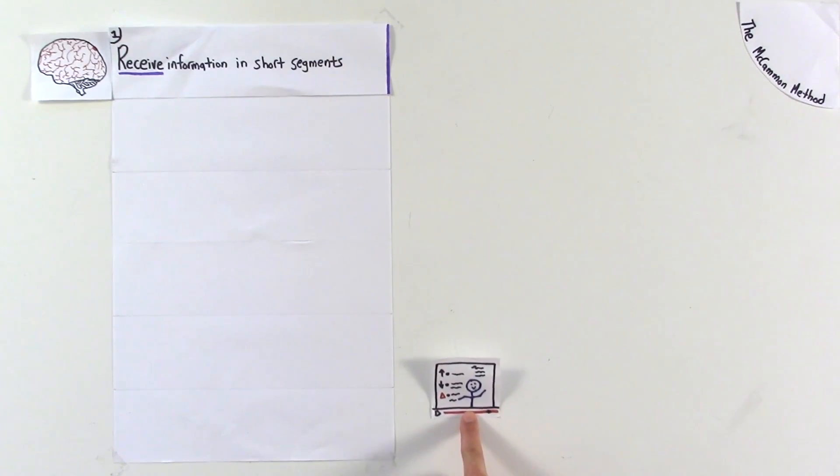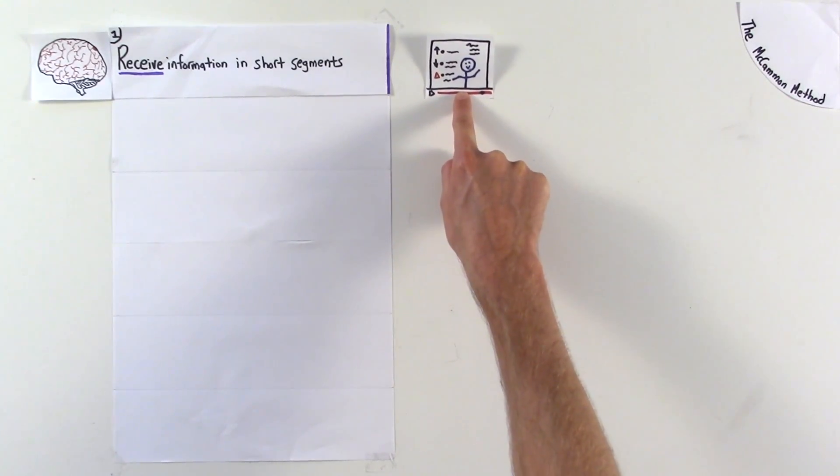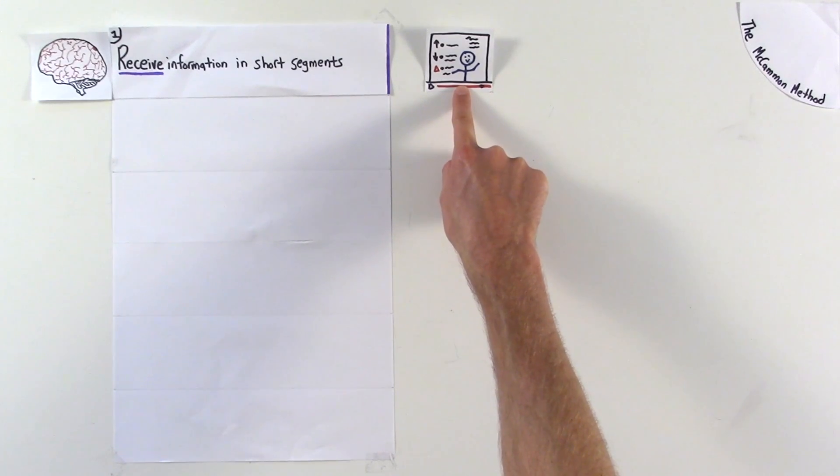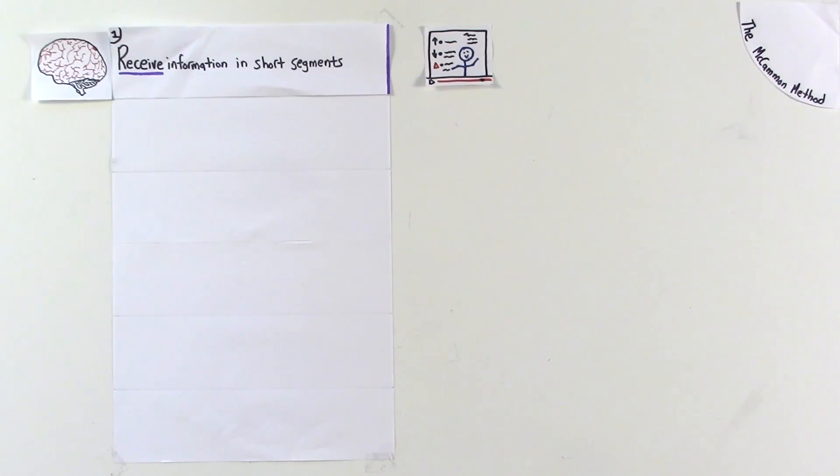Video lectures are ideal for delivering these short segments. They ensure an exact length and keep the teacher from being distracted by cognitive interruptions that happen frequently during live lecture. They also ensure that the content is consistent for all students and that the information is fully covered in every lesson.